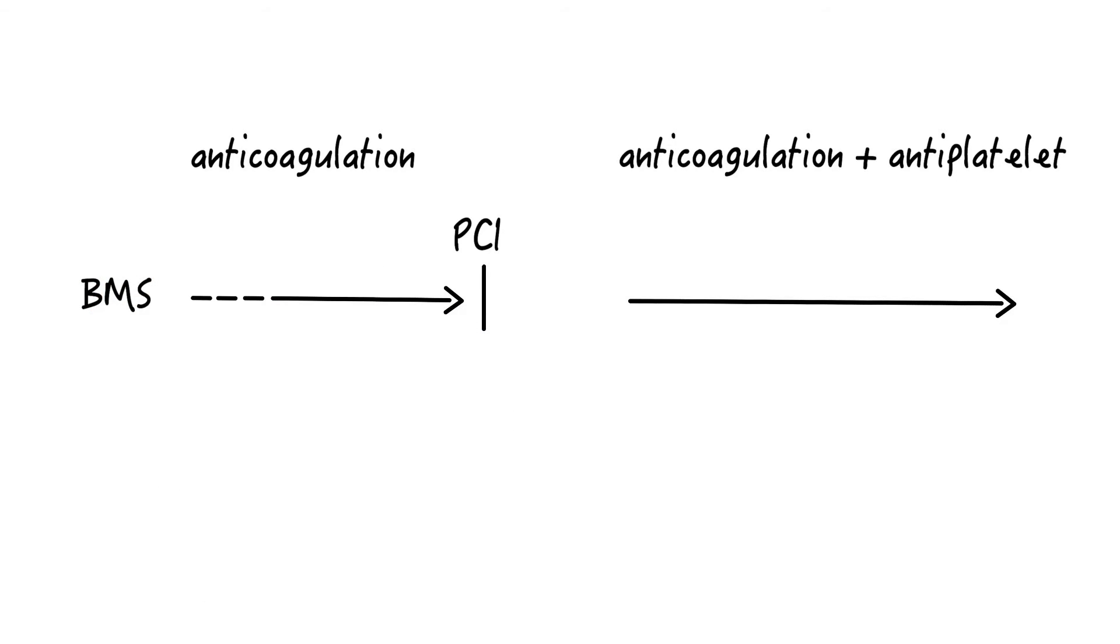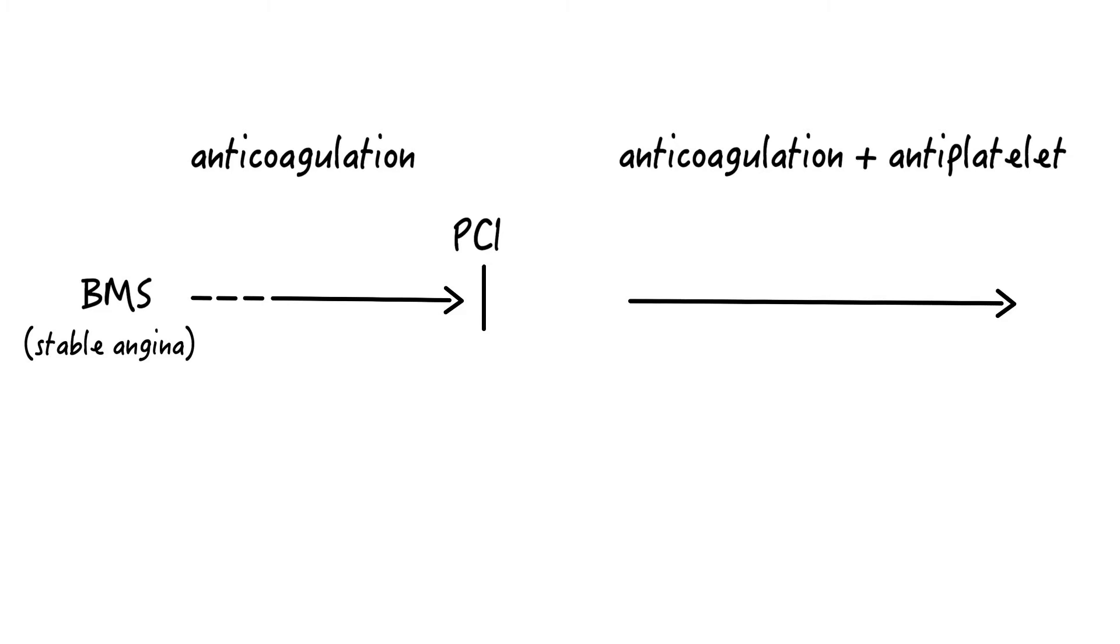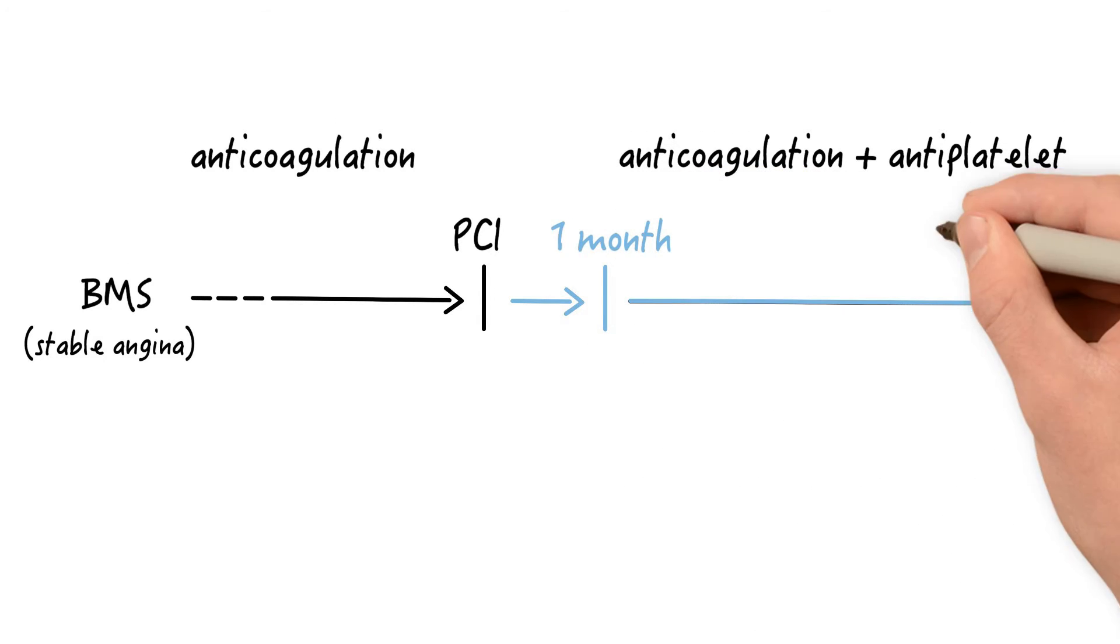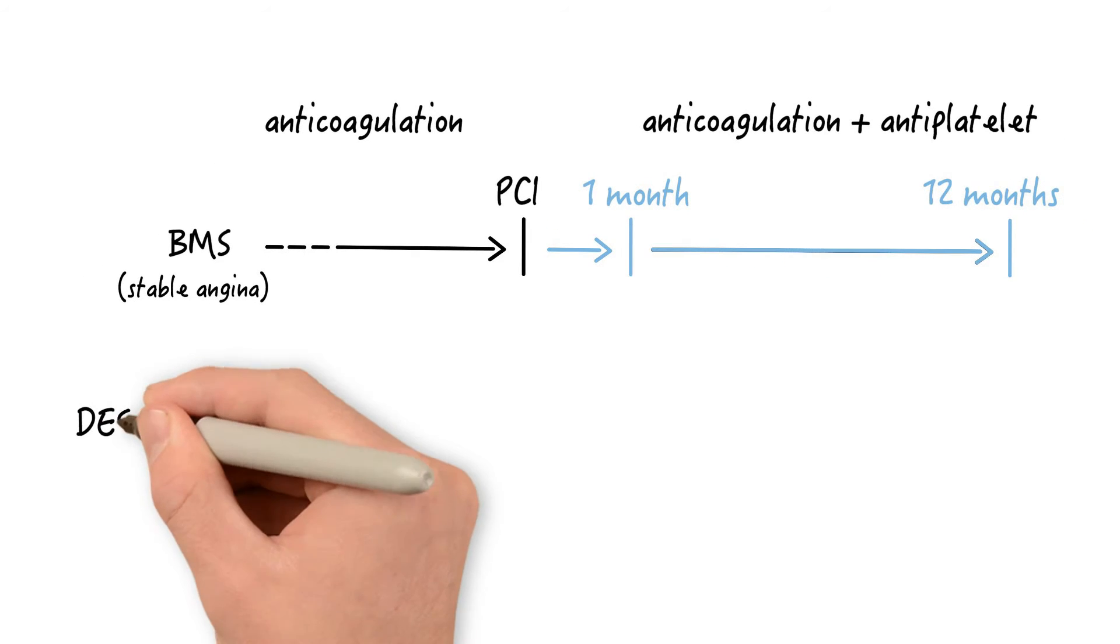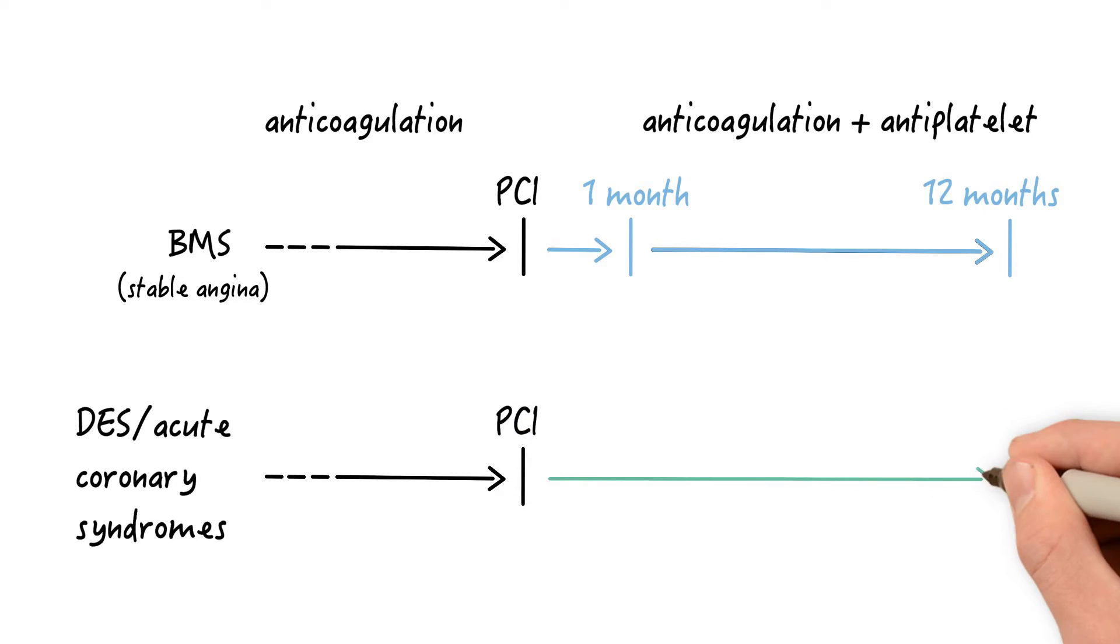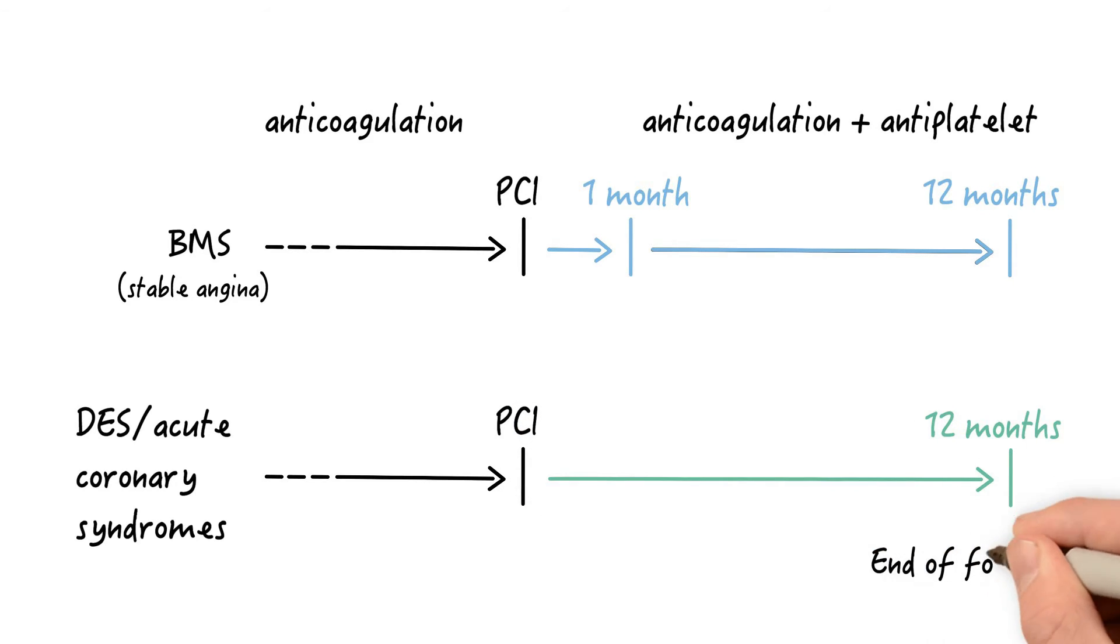In all of these patients, stable angina was the indication for stent implantation. Patients with bare metal stents received anticoagulation and antiplatelet therapy somewhere between one month and 12 months. That was left to the discretion of the treating physician. Patients in the drug-eluting stent group received anticoagulation and antiplatelet therapy for a total of 12 months.